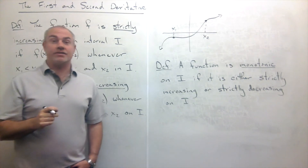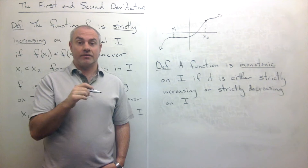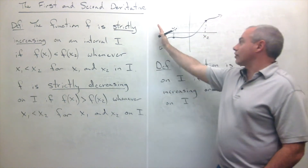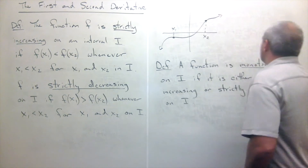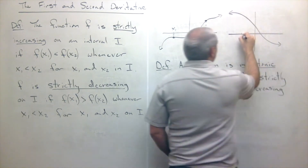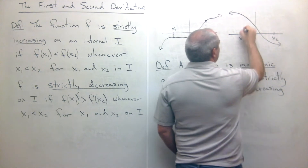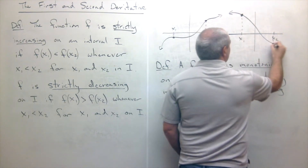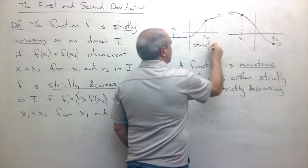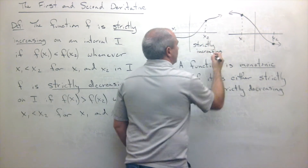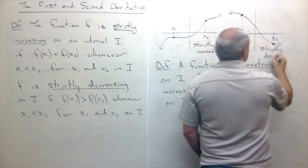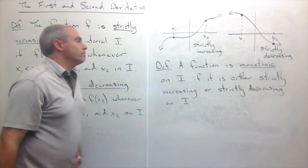If that's the case, then we say that the function is strictly increasing. Similarly, what does it mean for the function to be strictly decreasing? It means that if you're reading the graph from left to right, it's going down, not up. So if I have an x1 here and an x2 here, the functional value of x1 is always bigger than the functional value of x2. So this graph is strictly increasing and over here this graph is strictly decreasing.